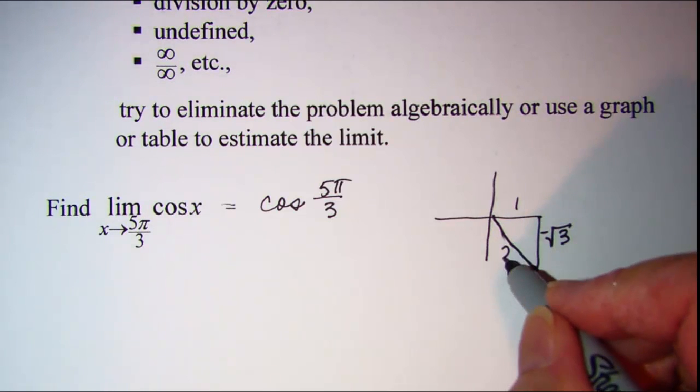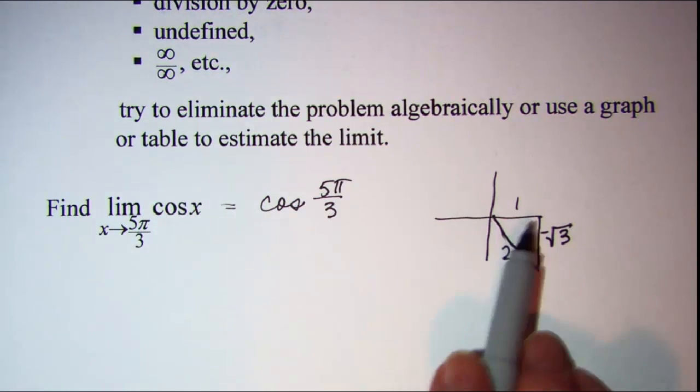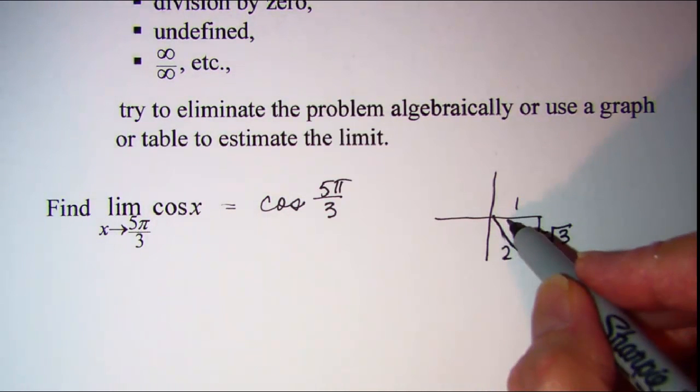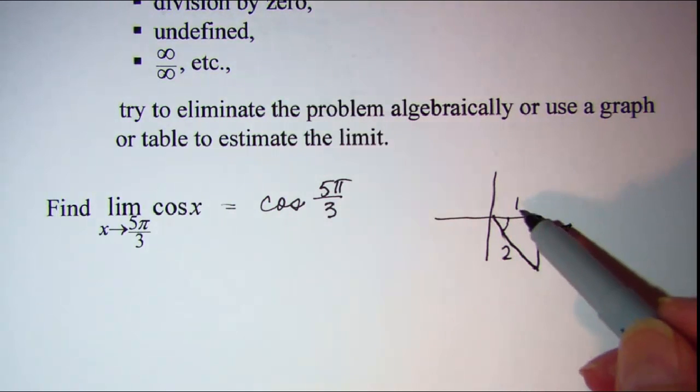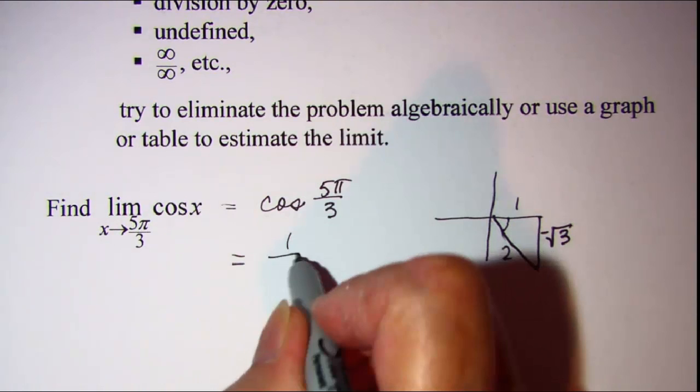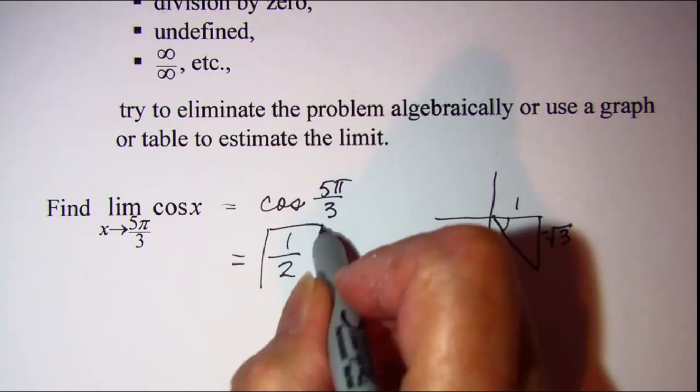So I'm wanting the cosine of this reference angle right here, and we know that that's defined as adjacent over hypotenuse, so 1/2 is my limit.